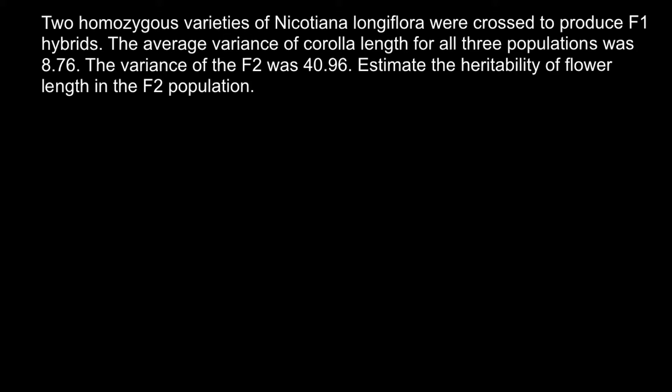Before I explain how to solve this problem, I want to give you some background information. We have two homozygous varieties, meaning two parents that both represent pure lines. Pure lines are plants that are homozygous for all loci, which is the result of self-pollination generation after generation. After about ten generations, we lose all heterozygosity.